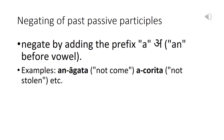Like the present participle, the past passive participle can be negated by the prefix 'a' or 'an' before a vowel. Examples are 'anagata' — not come, 'achorita' — not stolen, etc.